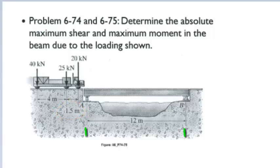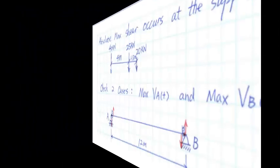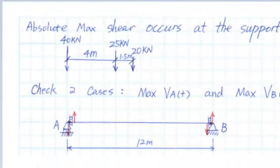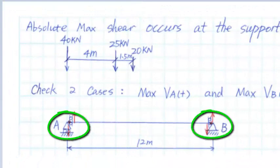For simply supported beams, the absolute maximum shear occurs at its supports. For this problem, we need to check two cases: maximum shear at A and maximum shear at B.